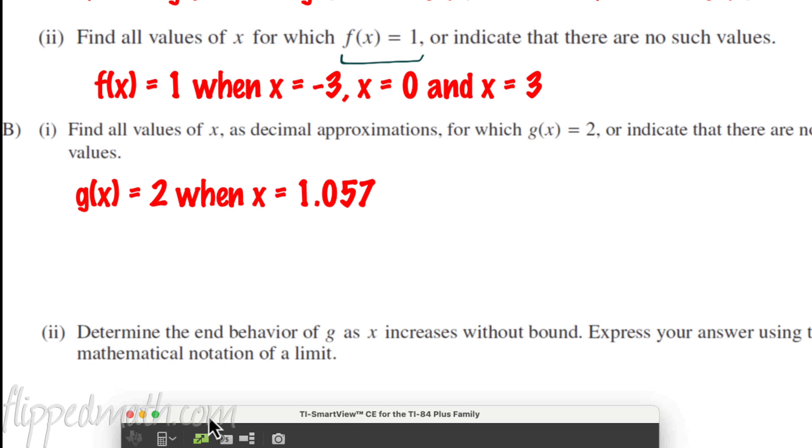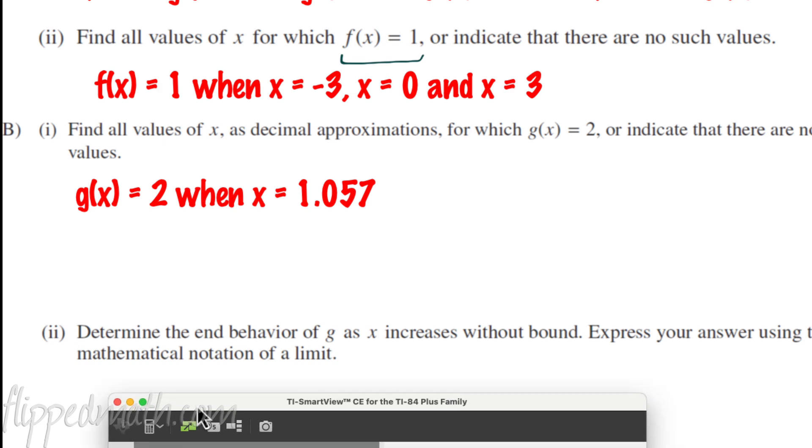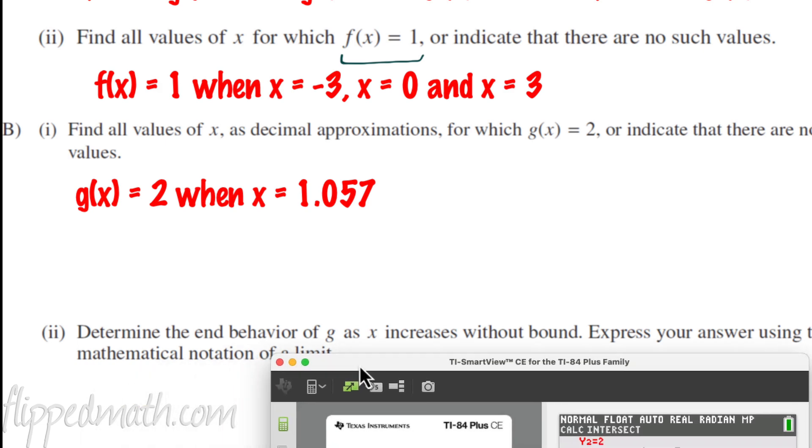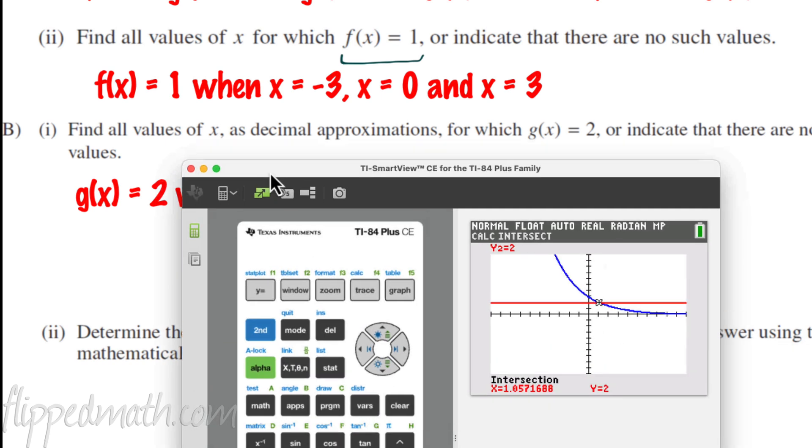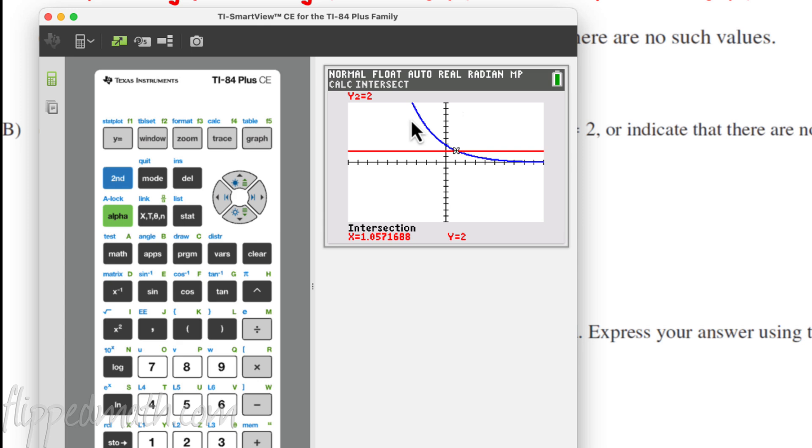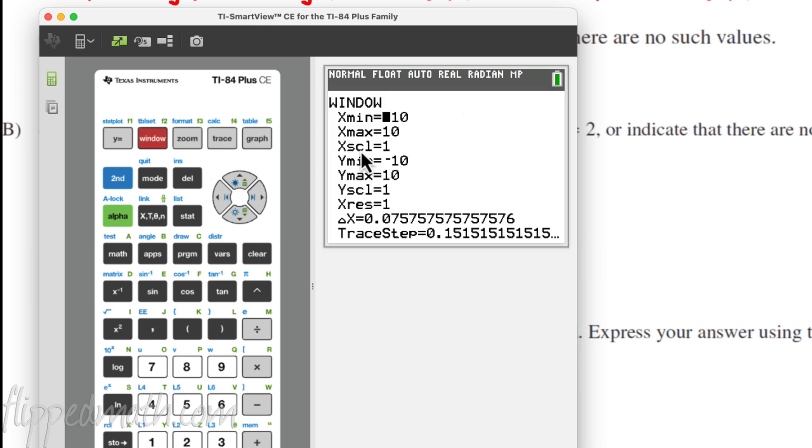The next question for part 2 asked, you have to determine the end behavior as x increases without bound. It means as x is getting super large. So let's look at, we have to use limit notation. Let's look at our graph here. We're looking at the blue graph. Okay. As x gets very large, what happens here? So I always tell my students, you can fix the window if you want. Let's fix the window.